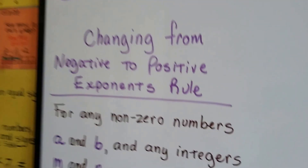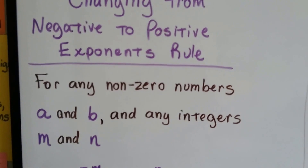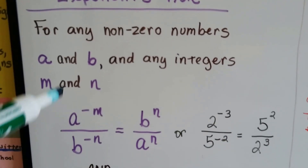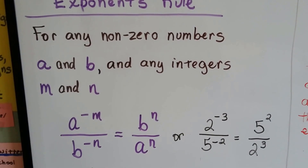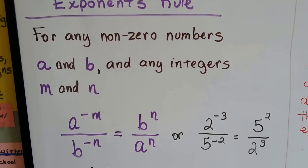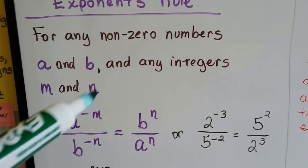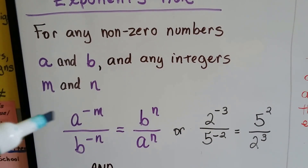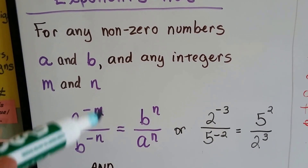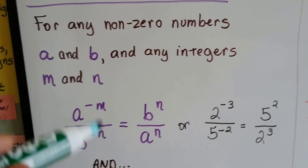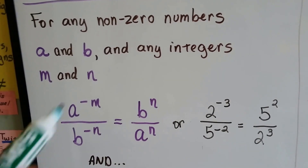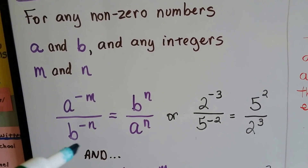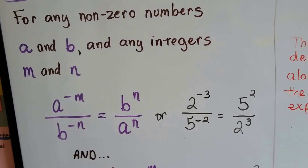So when we're changing from negative to positive, the rule we use is: for any non-zero numbers a and b — meaning the numerator or denominator can't be zero — and any integers m and n, and they're saying integers because they could be negative or positive. So if this isn't a zero, and if these are negative or positive integers, we can flip them around to the reciprocal, put the b as the numerator and the a as the denominator, and these negative signs will go away and they'll become positive.